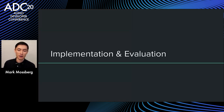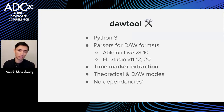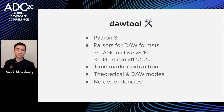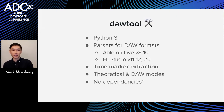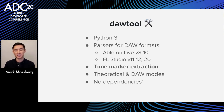I've implemented this all in a tool called DAW tool, written in Python 3. It has parsers for multiple versions of Live and FL Studio, implements the time marker extraction algorithm, and has modes for both theoretical and DAW-accurate operation. It has no dependencies, with the slight caveat that SciPy is used for integration in theoretical mode — but that mode is disabled by default since it's inaccurate.